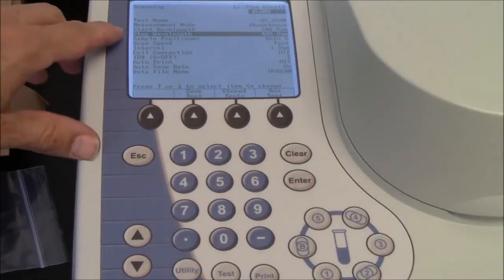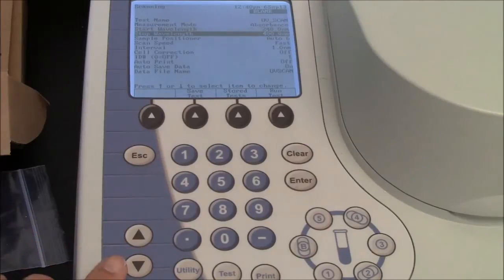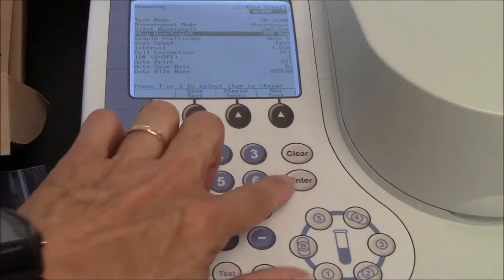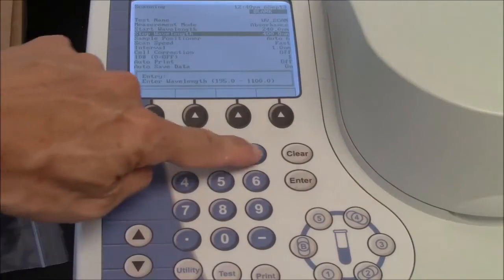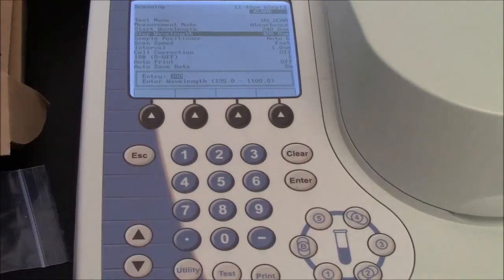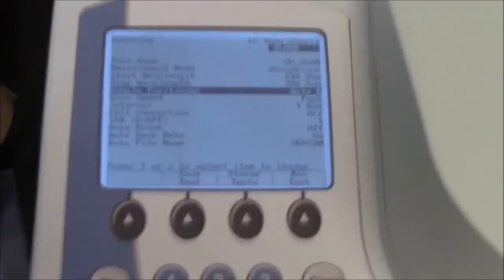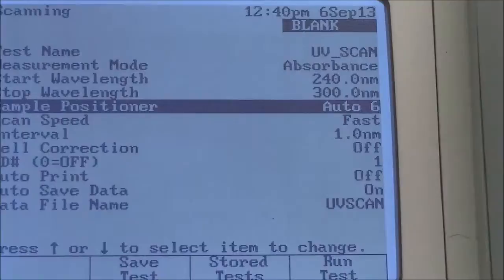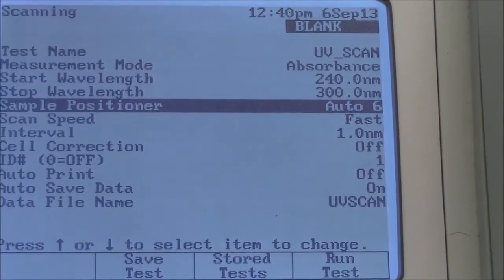I can similarly set the stop wavelength. Use my arrow keys to highlight the choice. Hit Enter. Type in a value. In this case, I'll type in 300 nanometers. Hit Enter. It is set to scan the wavelengths between 240 and 300 nanometers.